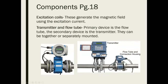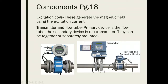Excitation coils generate the magnetic field using excitation current. The primary device is the flow tube and the secondary device is the transmitter. They can be unified and mounted in place together, or the flow tube can be mounted in the piping with the transmitter remotely mounted on the wall.